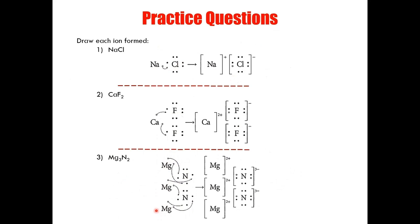That's why it's not very prudent for you to understand how to draw those complex electron-movement representations. What's important is knowing how to draw the final ionic Lewis structures. We know because of the crossover rule that magnesium is going to have three ions and nitrogen is going to have two ions, with a three negative charge and a two positive charge respectively.